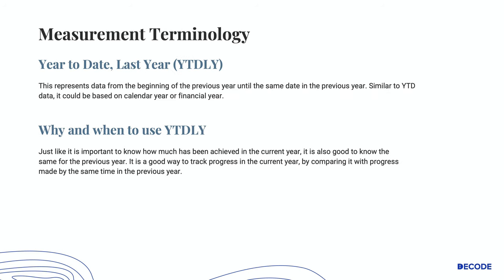The next term is YTD LY, which represents data from the beginning of the previous year until the same date in the previous year. Similar to YTD data, it could be based on calendar year — the 1st of January — or financial year if different. When do you use YTD LY? Just like it's important to know how much you have achieved in the current year, it is also good to know the same for the previous year. It is a good way to track progress made in the current year by comparing it with progress made by the same time in the previous year.